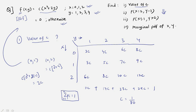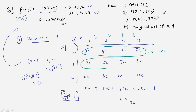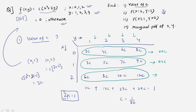Another way to verify: add terms row by row instead — horizontally. Adding the first row gives 20c, the second row 3+5+7+9 = 24c, and the last row 8+10+12 = 36c (with the remaining term). So 20c + 24c + 36c = 1 also gives c = 1/80.